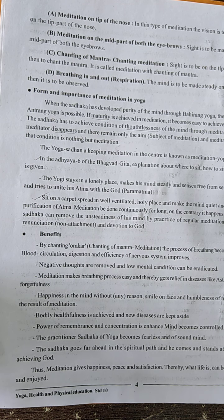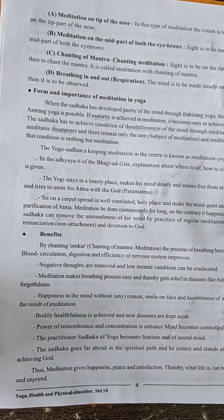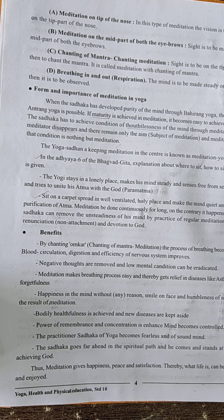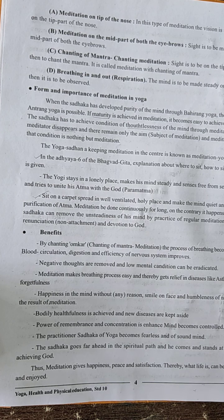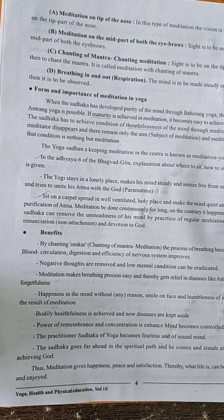Thoughtlessness aati hai — vichar shunyata. When the mind becomes pure through meditation, a stage comes which we have perhaps never experienced before — thoughtlessness. Non-stop continuous unlimited thoughts are arising in our minds, but when you practice meditation you achieve the condition of thoughtlessness. With meditation only, ek aisi stage aati hai jab aap khud ko bhool jaate ho — you as the meditator disappear.